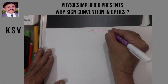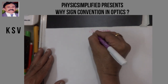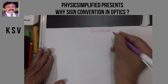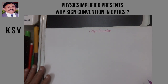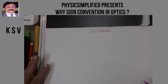Sign convention in optics is a very important concept. After all, why sign convention? To have the relevant formula for the lenses or the mirrors, we must apply these sign conventions.